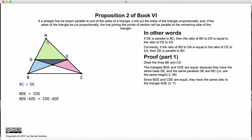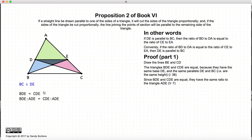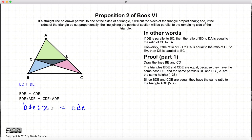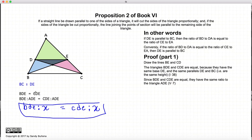Now let's add a third element: the area of triangle ADE. We have ADE equal to itself, and BDE equal to CDE. According to Proposition 7 of Book 5, if we have two things that are equal and we take a third thing, the ratios between each of those equal things and the third thing will also be equal. So since BDE equals CDE, their ratios to ADE will also be equal.